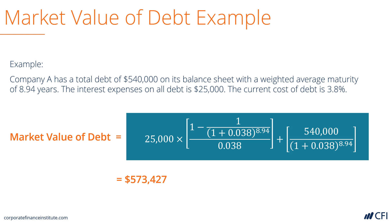One way to sense-check this is to take the income statement interest expense of $25,000, divided by the book value of debt of $540,000, and you would get a cost of debt or interest expense of 4.6%. Since the current cost of debt is only 3.8%, it makes sense that the market value of debt is going to be higher than the book value. Because investors would get the higher coupon rate on buying this debt, they would be willing to pay more for it.